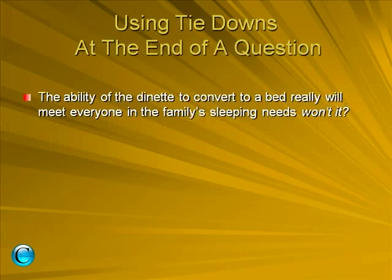Here's an example: 'The ability of the dinette to convert to a bed really will meet everyone in the family's sleeping needs, won't it?' The 'won't it' is the tie-down. If the customer says yes, they're in agreement — you've met all the family's sleeping needs, and now you can throw in some additional value, like another special feature on this dinette. If you get a yes, build additional value. If you get a no, you have an objection — not a problem. Now you have something to overcome, and our ultimate goal with questions is to close the sale.